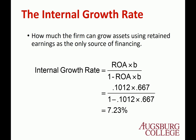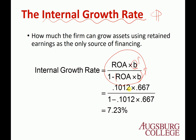Let's look at the internal growth rate. The definition assumes we use retained earnings as the only source of financing — we don't make any external financing, we don't borrow more money, we don't issue more stocks. The possible growth rate for the firm is: ROA times the retention ratio, divided by 1 minus ROA times the retention ratio. It means that if you retain more, your internal growth rate increases. In this case, ROA is 10.12% and the retention ratio is 66.7%, so the internal growth rate is 7.23%. Without any external financing, this is the growth rate you can make.